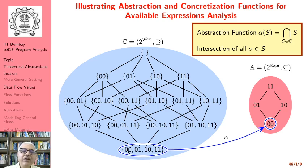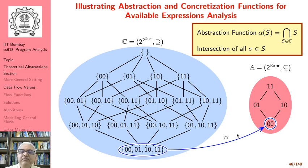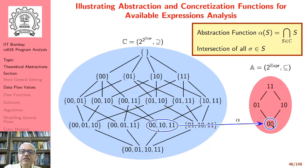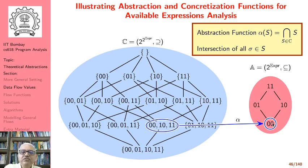Similarly, if we take another set where the information reaching along all paths includes a path along which no expression is available, the abstraction of that set is data flow value 00. If we take a set where there is no path with no expression available, but along one path only the second expression is available and along another only the first, their intersection still gives us 00, so the abstraction is still 00.